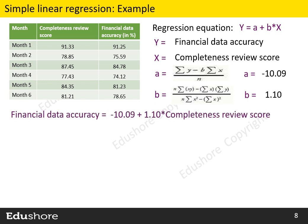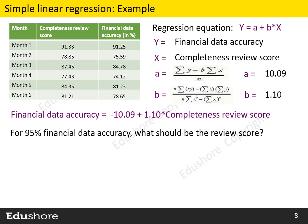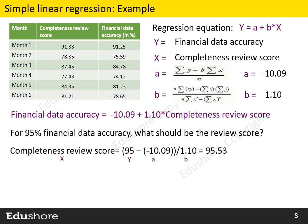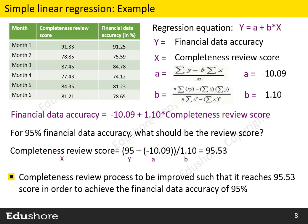If we reconstruct the regression equation with these values, we get the final equation. To achieve the goal of 95% financial data accuracy, we can find out the optimum value of the completeness review score using the formula X = (Y − A) / B, which equals 95.53. This tells us that the completeness review score must be improved to 95.53% in order to achieve the overall financial data accuracy of 95%. This is how we use regression to estimate the relationship between X and Y, helping us move toward specific solutions for the Project Y.